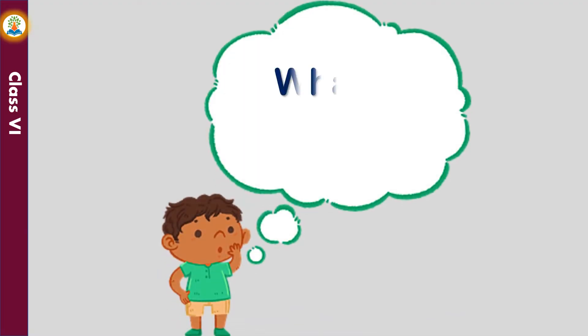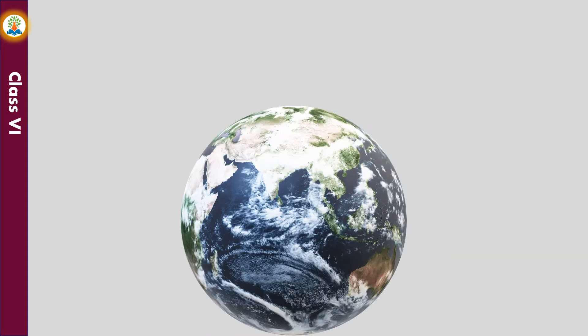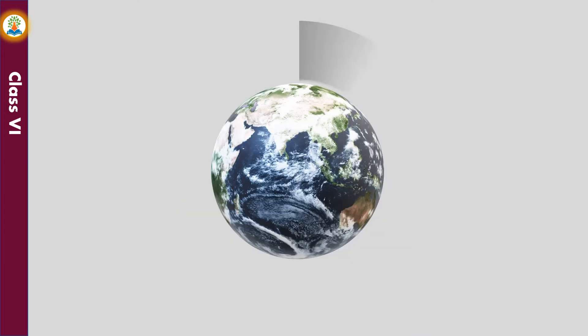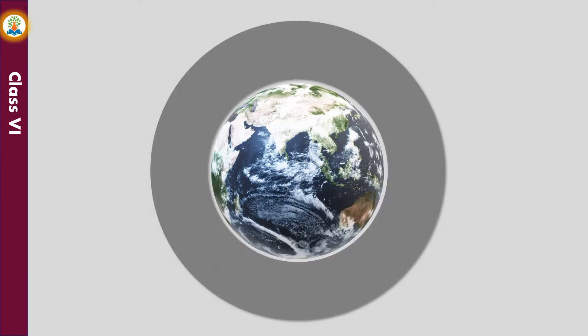What is atmosphere? We live on Earth and our Earth is surrounded by a thick blanket of air. The envelope of air surrounding the surface of the Earth is called atmosphere.